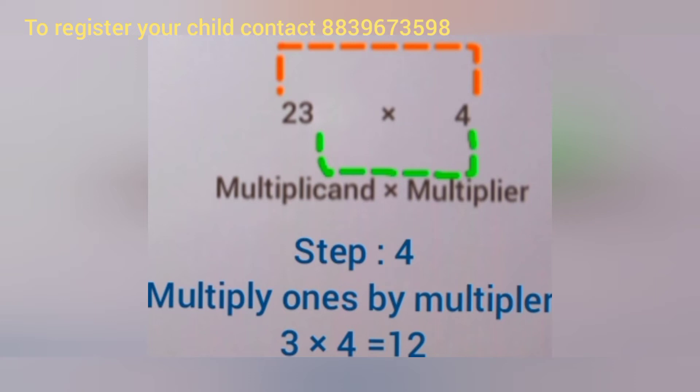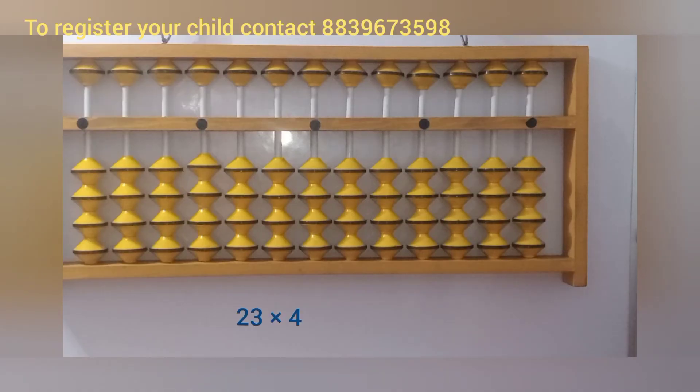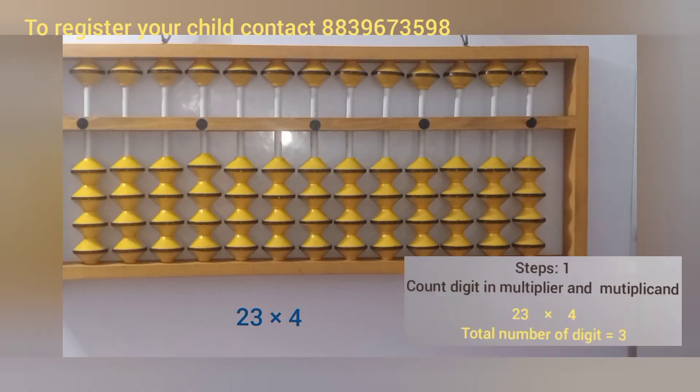Now let's do this question in the abacus tool. The question is 23 × 4. First step is to count the digits. The total number of digits is 3.